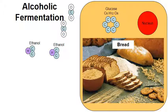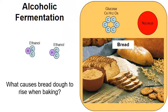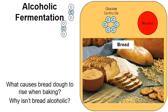Bread is created by yeast as they perform alcoholic fermentation. What causes bread dough to rise? The answer is the carbon dioxide — as it's released by the yeast cells, the carbon dioxide gas causes the dough to fluff up and the bread rises. You might wonder why bread isn't alcoholic if it's created through alcoholic fermentation. That's because of the baking process — the heat from the oven causes the ethanol to burn away and simply evaporate.